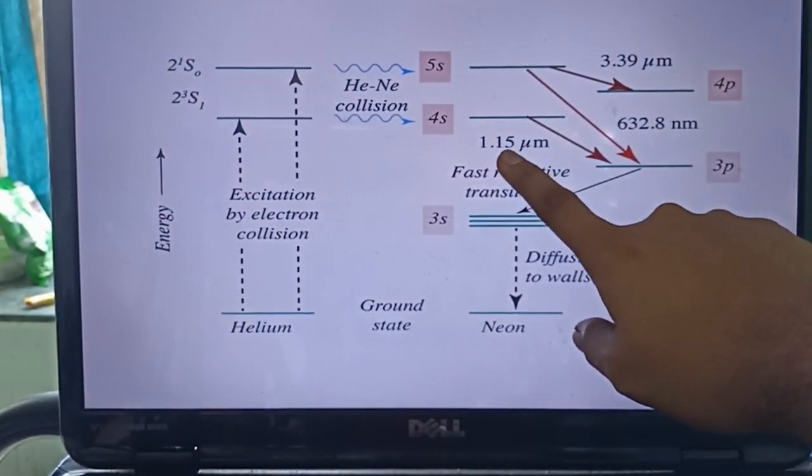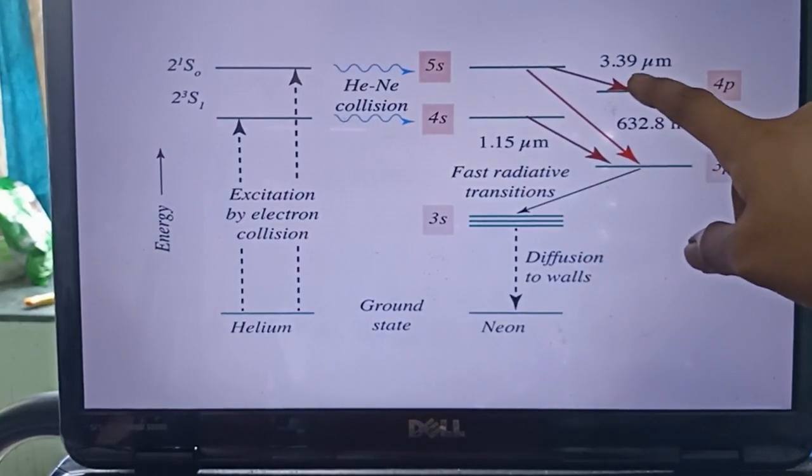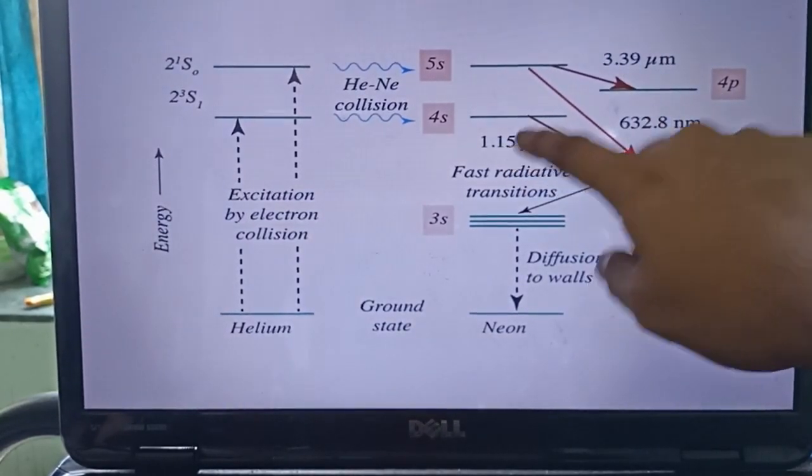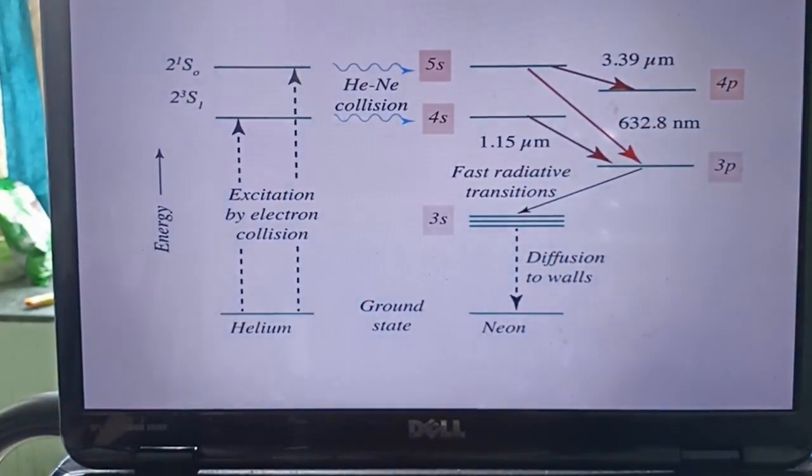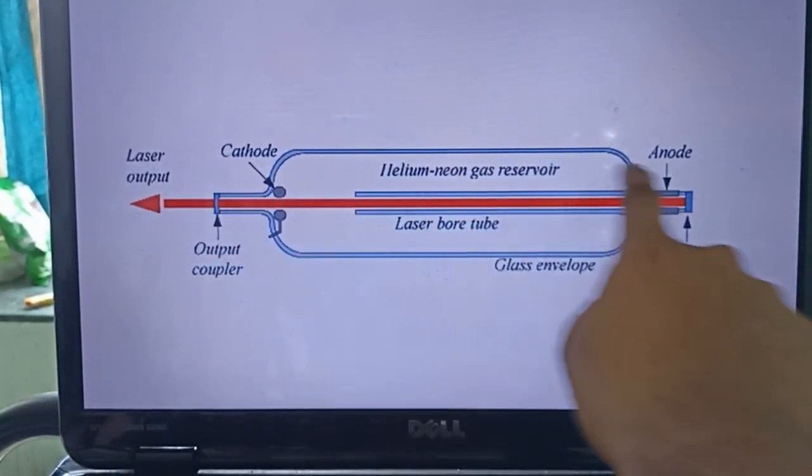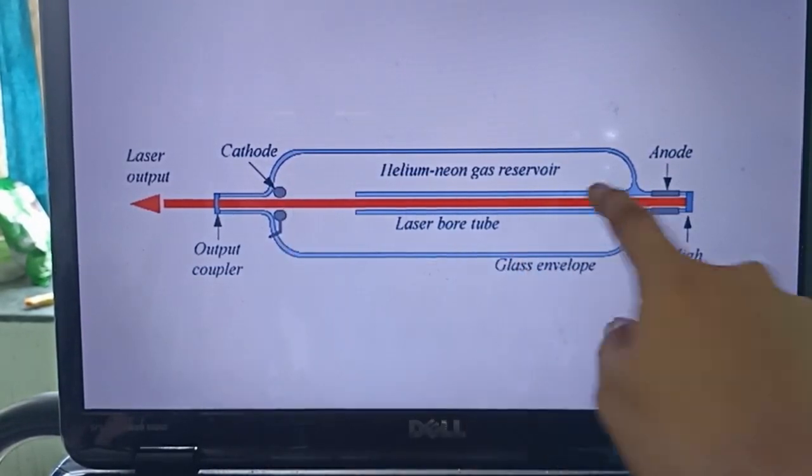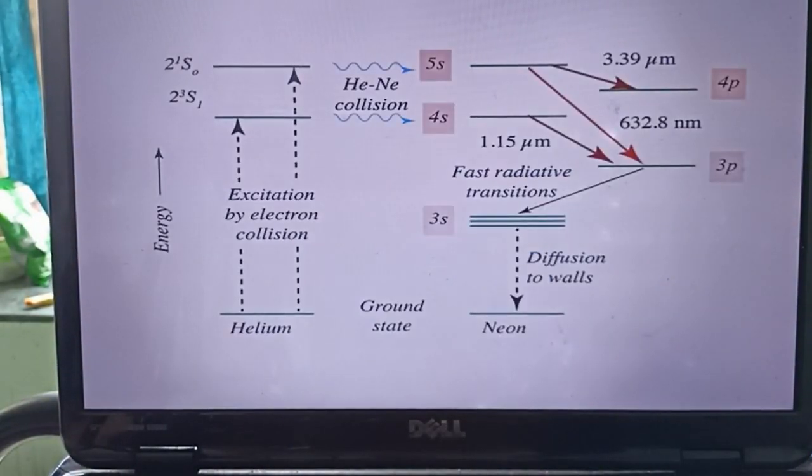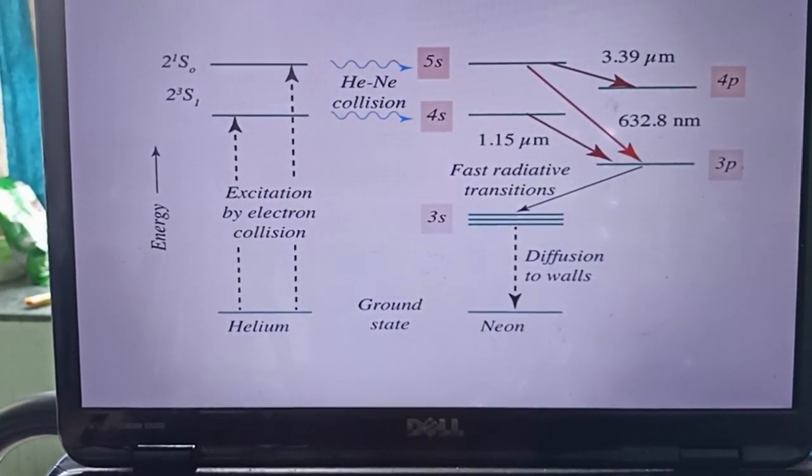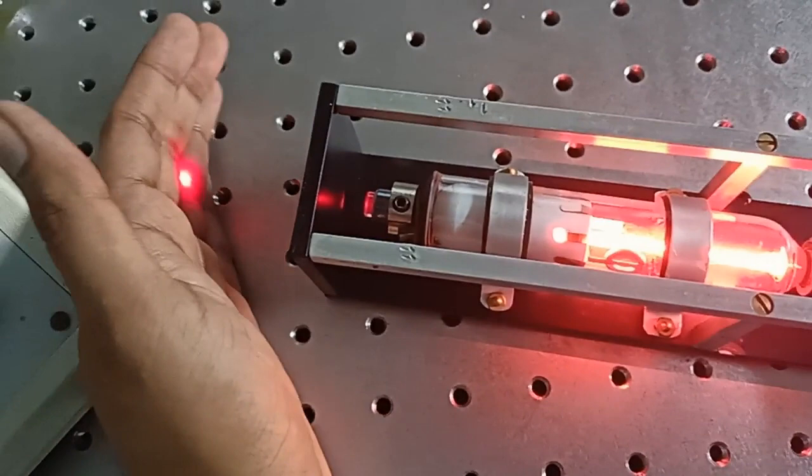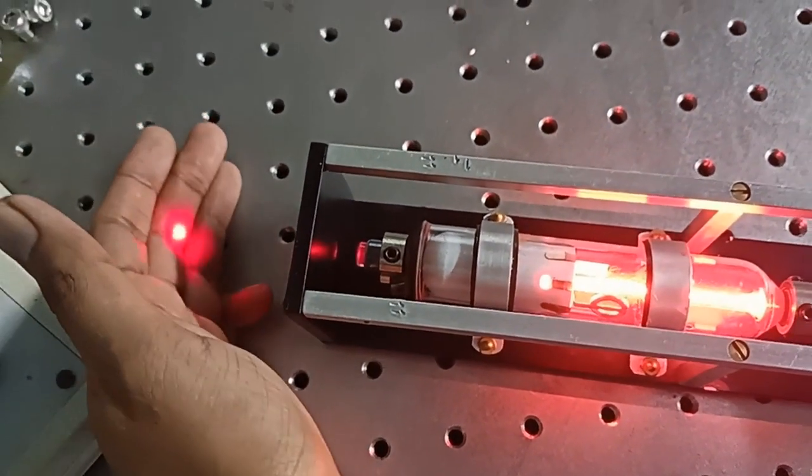1.15 micrometer and 3.39 micrometer wavelength radiation is absorbed. But 632.8 nanometer goes to and fro, gets reflected back and forth in the mirror, and spontaneous and stimulated emission occurs. There is more stimulated emission, hence we can see red light coming out from the laser cavity.